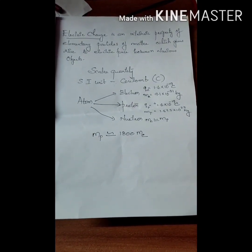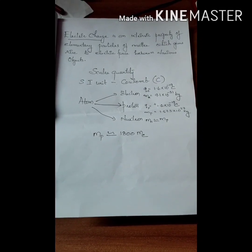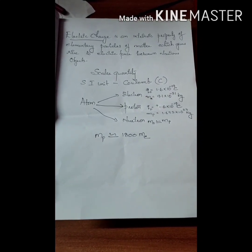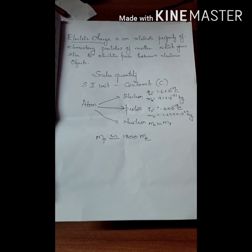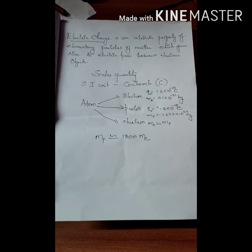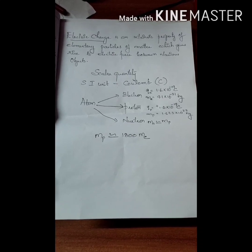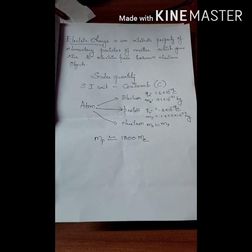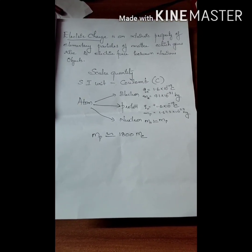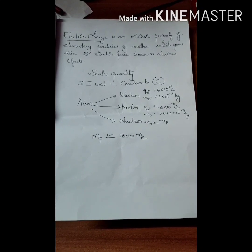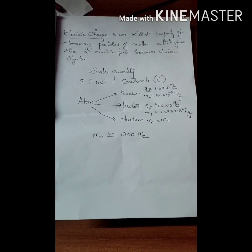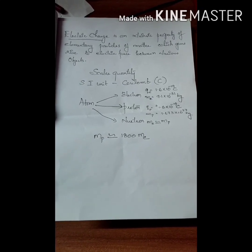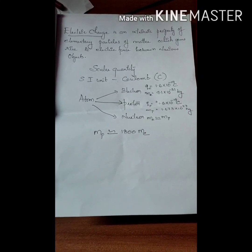Electric Charge is a scalar quantity. Its SI unit is Coulomb, represented with capital C. The charge of a proton is positive 1.6×10⁻¹⁹ Coulomb, and the electron carries a negative charge with the same magnitude of 1.6×10⁻¹⁹ Coulomb. When you compare the mass of proton and electron, you can see that the mass of a proton is approximately equal to 1800 times the mass of an electron.